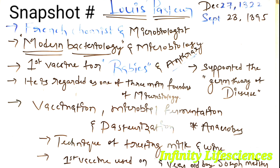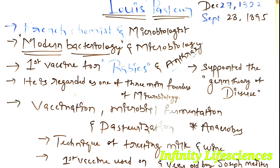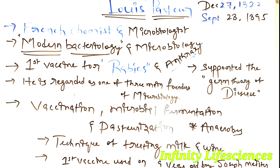Let us take a snapshot of today's class. Louis Pasteur was a French chemist and microbiologist. He is the father of modern microbiology and the father of modern bacteriology. He introduced the first vaccine for rabies, and also introduced a vaccine for anthrax. He is regarded as one of the three main founders of microbiology. He introduced vaccination, microbial fermentation, and pasteurization, as well as the concept of anaerobes. He introduced the technique of treating milk and wine, called pasteurization. The first vaccine was used on nine-year-old Joseph Meister. He also supported the germ theory of disease. He died in the year 1895.